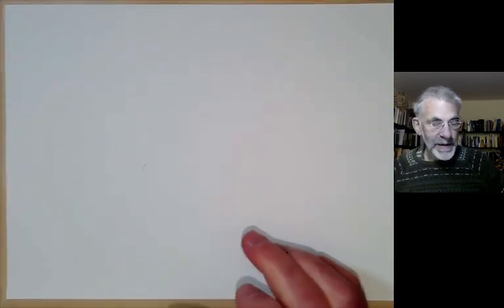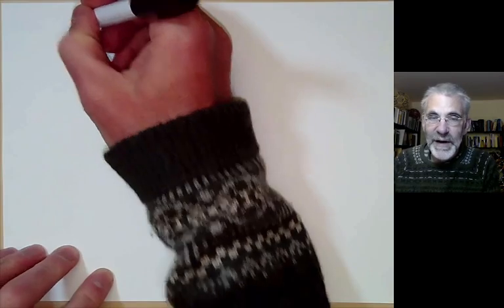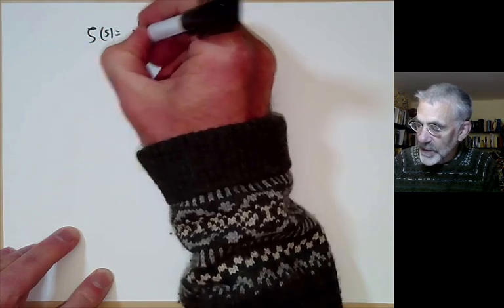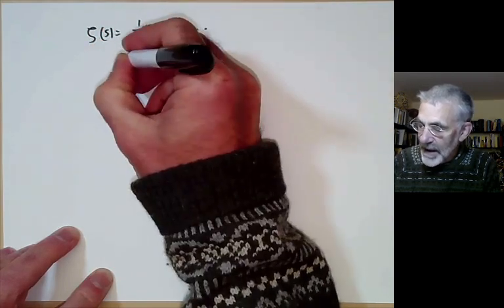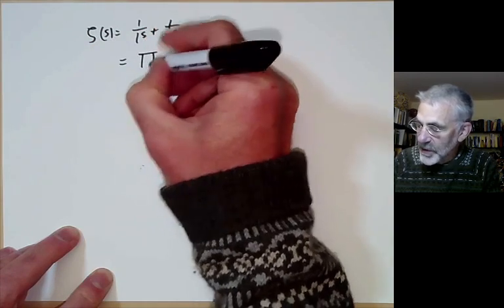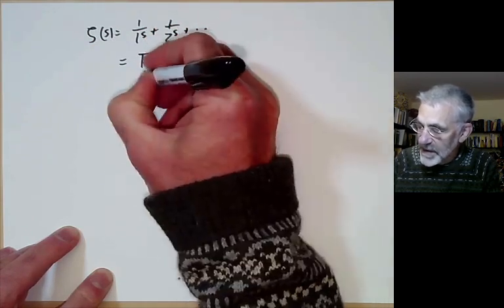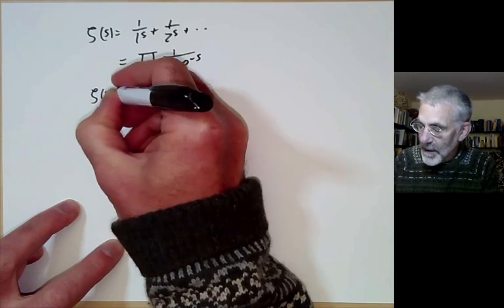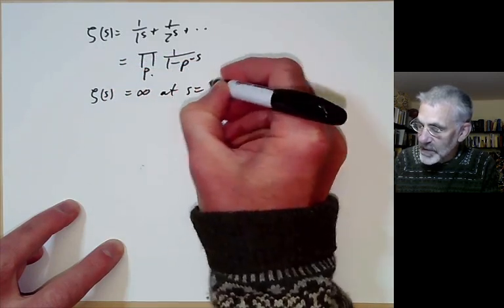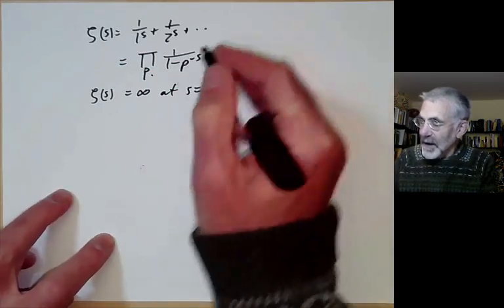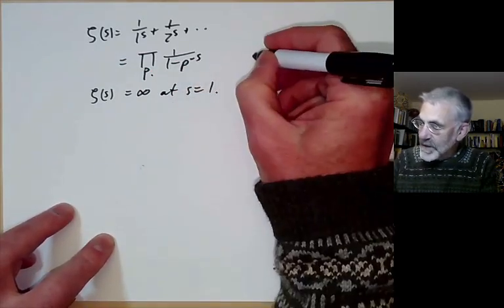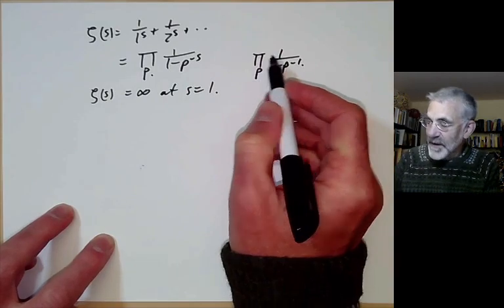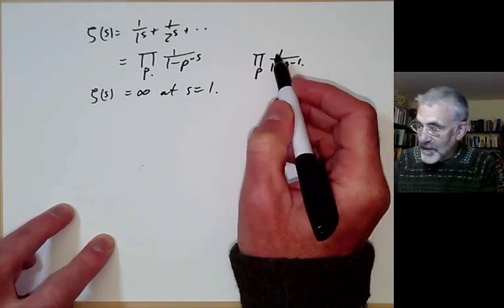What Dirichlet did was use Euler's proof that there are infinitely many primes. We quickly recall that zeta of s equals 1 over 1 to the s plus 1 over 2 to the s and so on. Euler showed this could be written as an infinite product over all primes of 1 over 1 minus p to the minus s. Euler simply noted that zeta of s is infinite at s equals 1, and at s equals 1 this product becomes the product over all primes of 1 over 1 minus p to the minus 1, which is finite unless there are infinitely many primes.